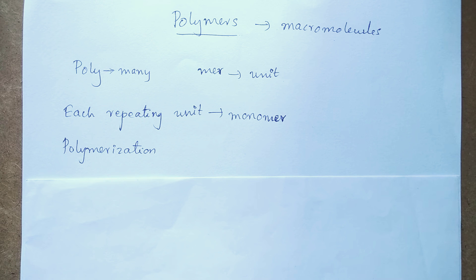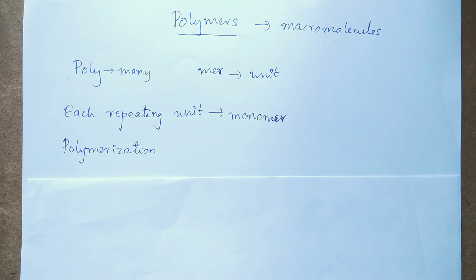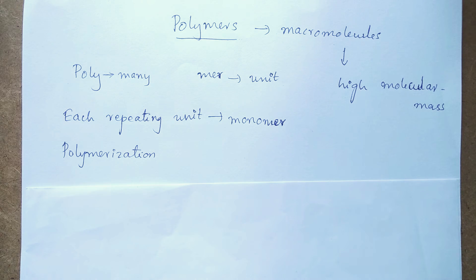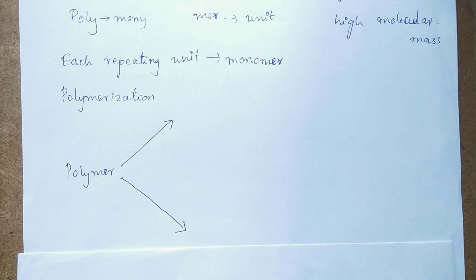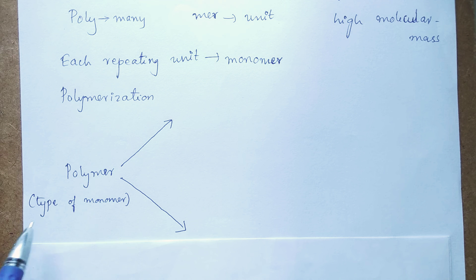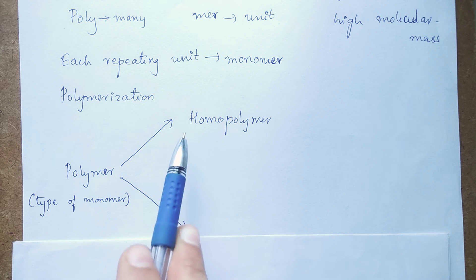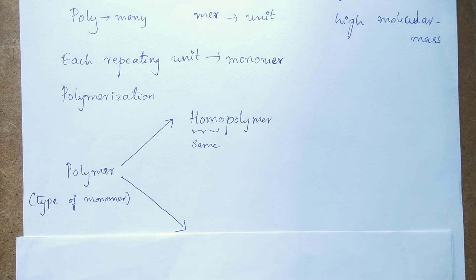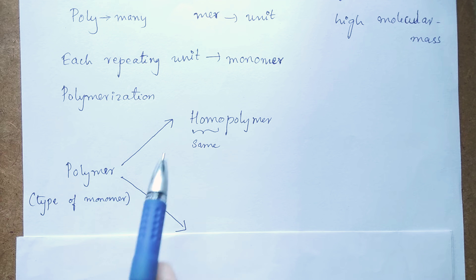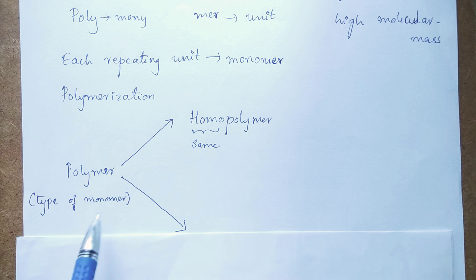Since polymers are very large molecules, they have relatively high molecular mass. We can classify polymers into two types depending upon the type of monomers present. The first type is homopolymer. Homo means same, so from the name itself you can understand that homopolymers are polymers formed by the combination of the same type of monomers, or only one type of monomer unit.